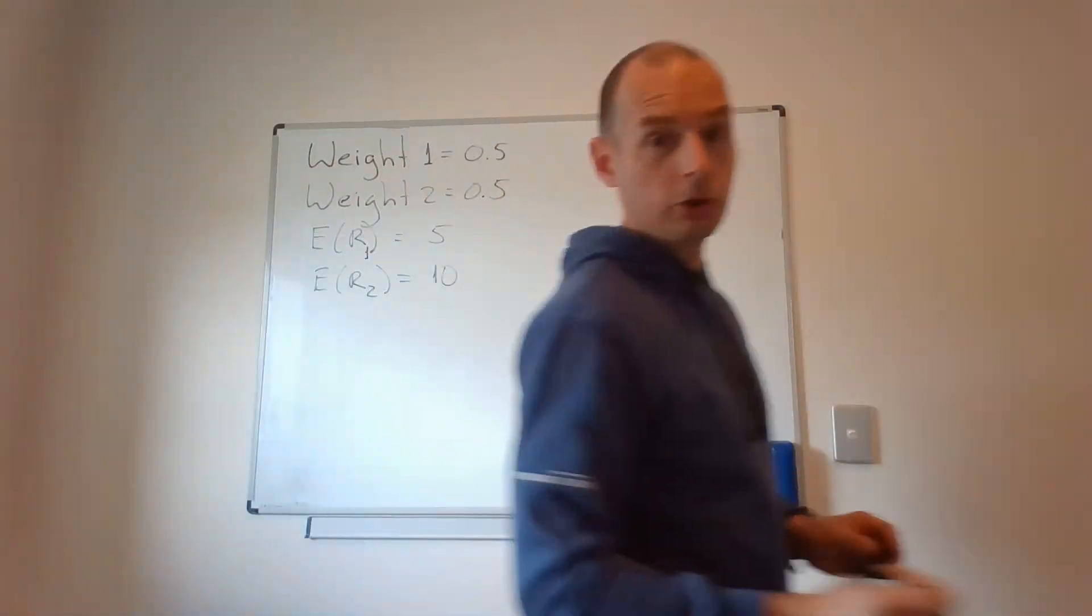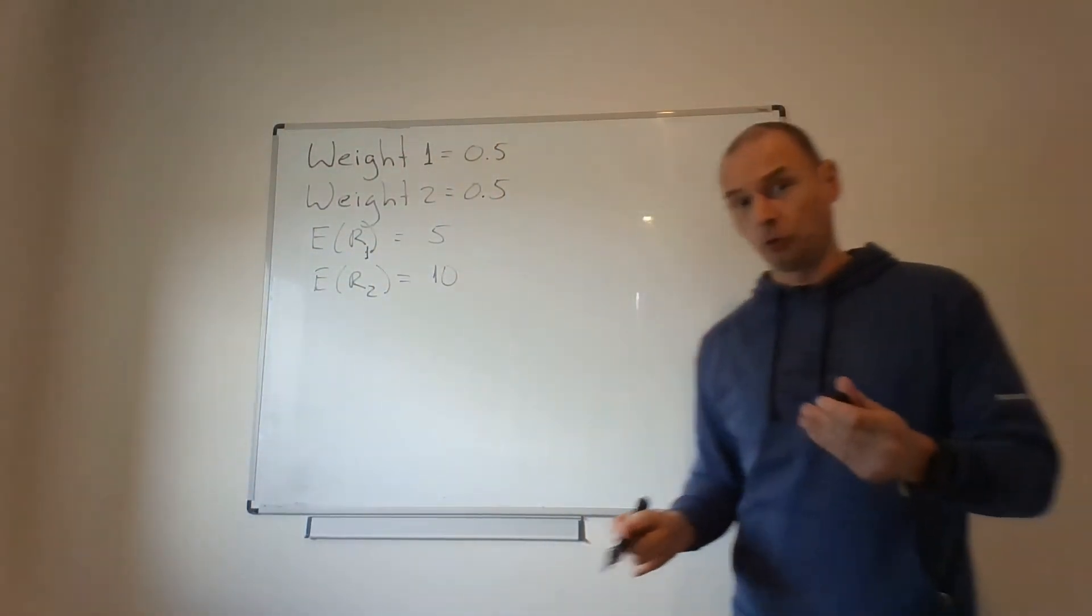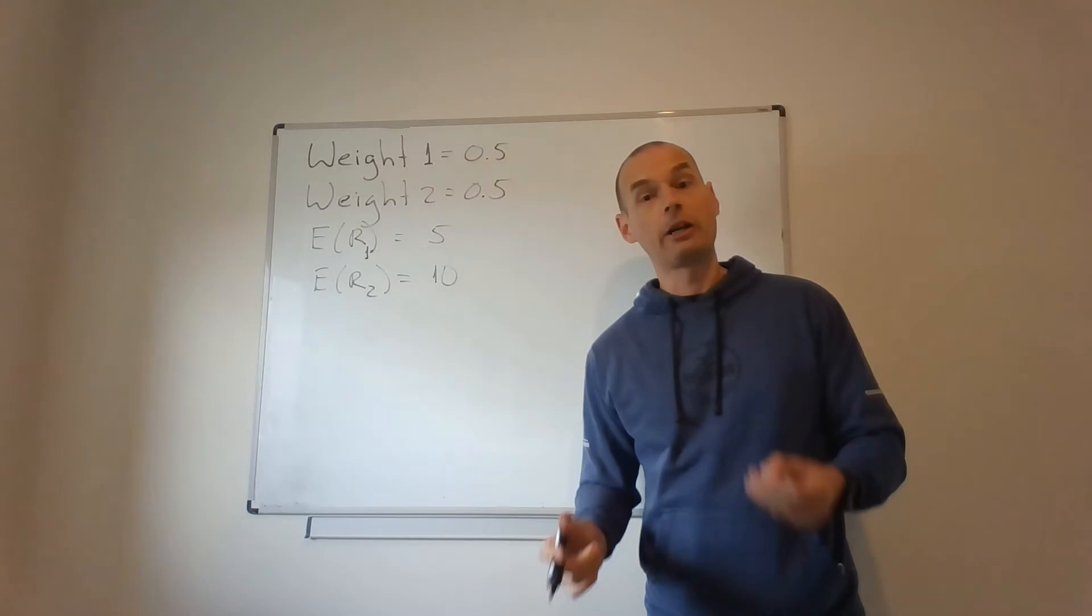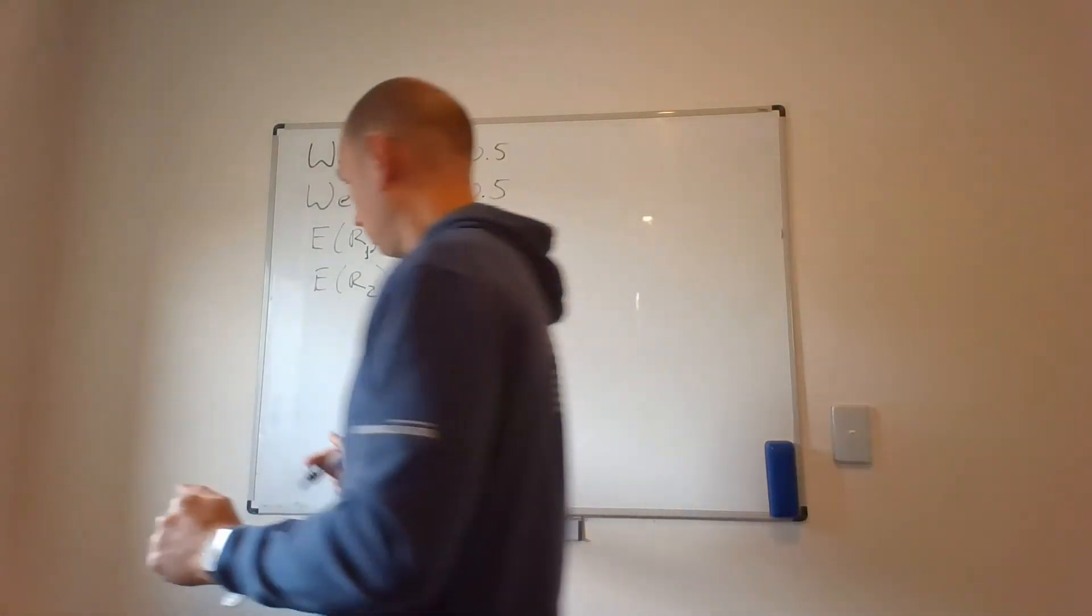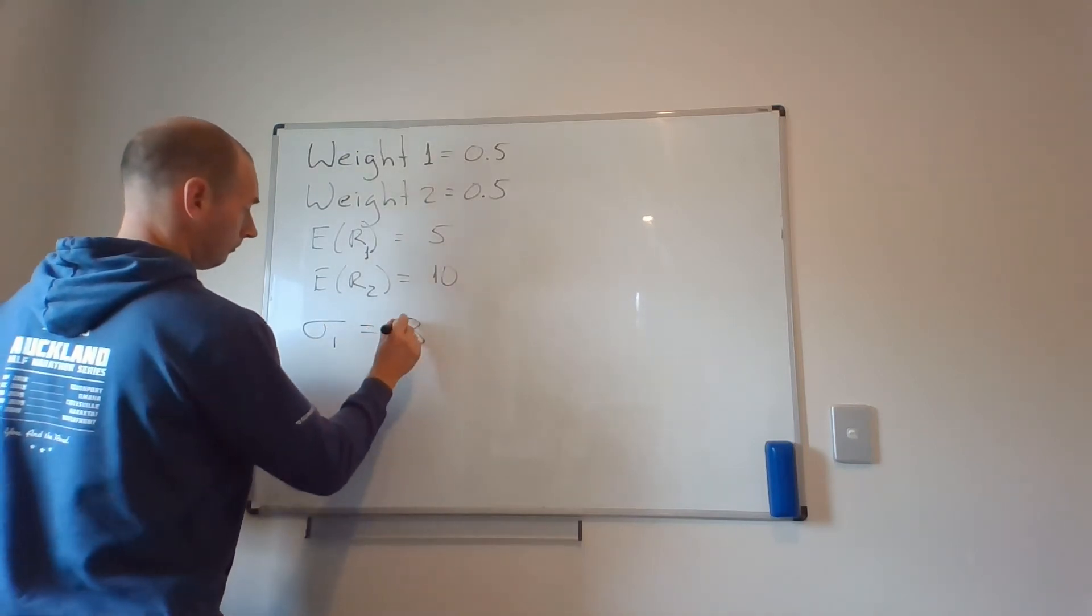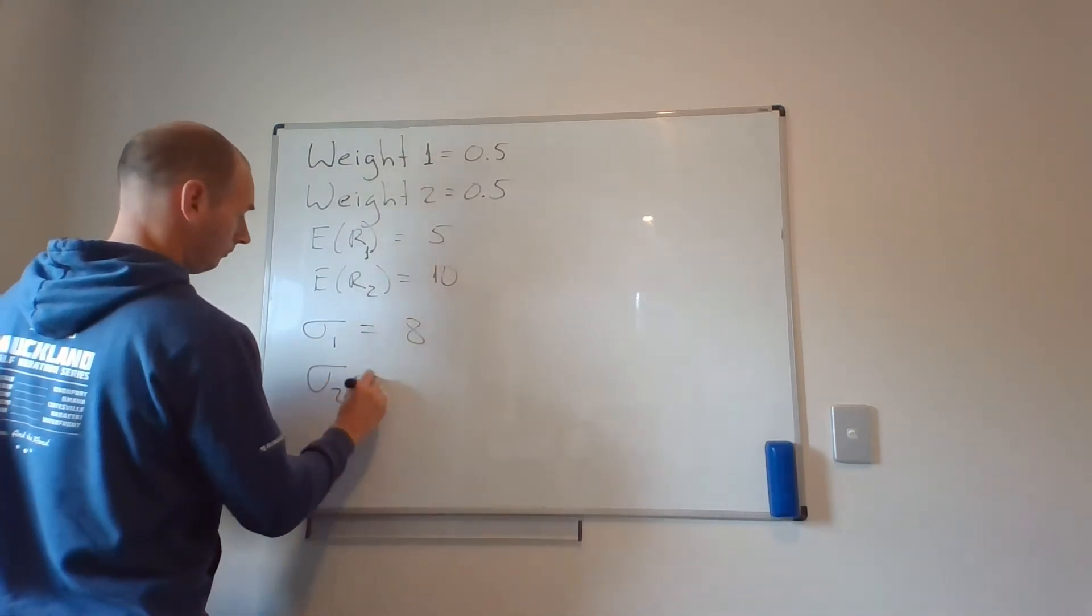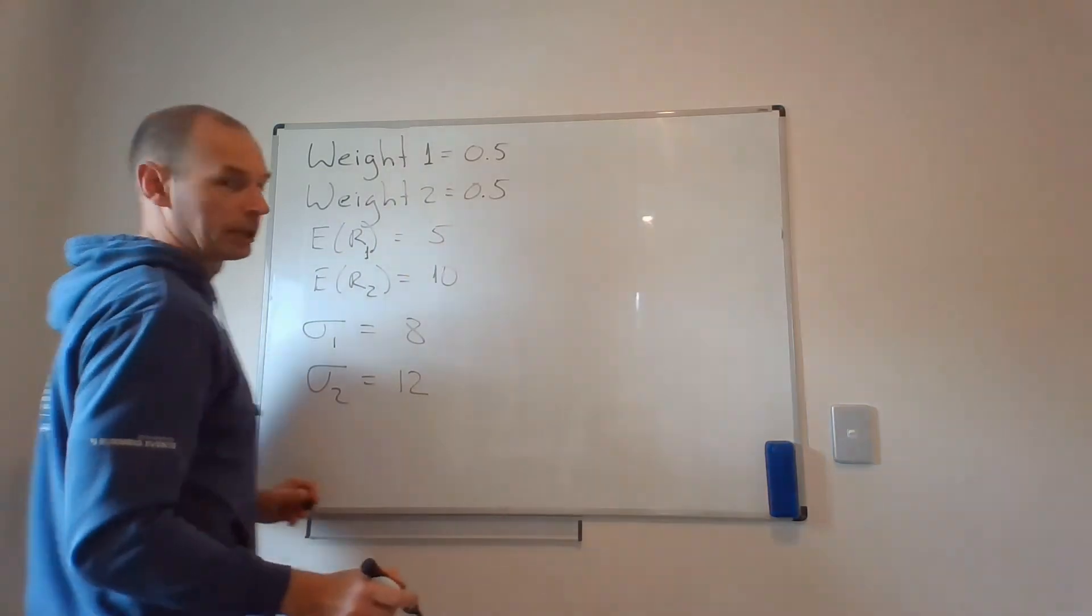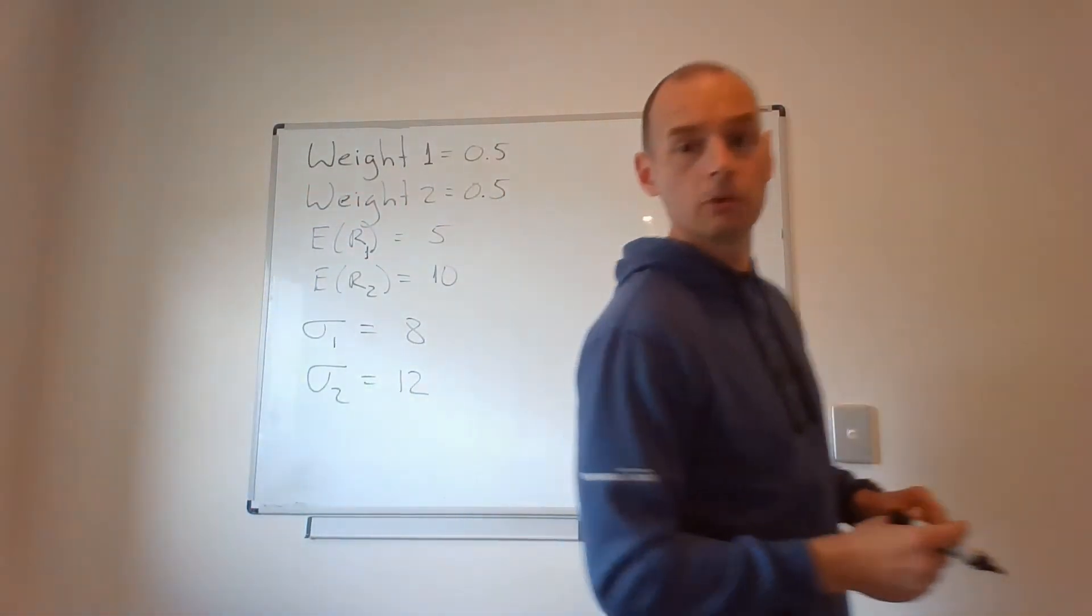Then, of course, I need to know their individual standard deviations, their individual risks. And they are denoted by the letter sigma. So let's say sigma one is eight, sigma two is 12. I'm just making these numbers up, making some easy numbers.